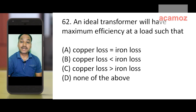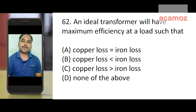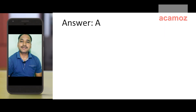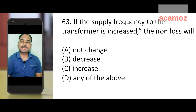Second question: an ideal transformer will have maximum efficiency at a load such that — option A: copper loss is equal to iron loss, option B: copper loss is less than iron loss, option C: copper loss is greater than iron loss, option D: none of the above. The answer is option A: copper loss is equal to iron loss.